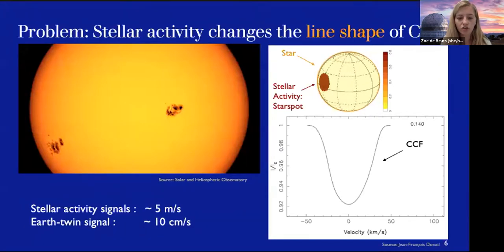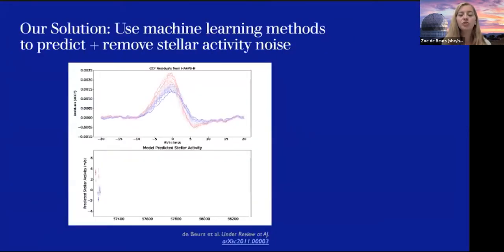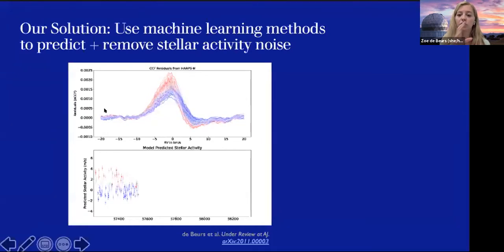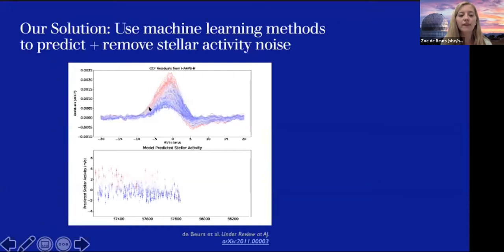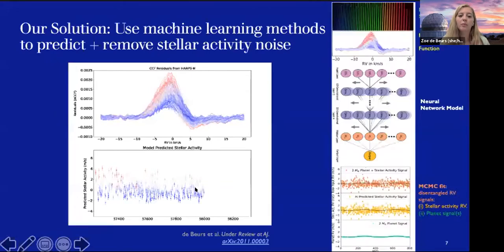Our solution is to use machine learning methods to predict and remove stellar activity noise, revealing signals of smaller planets. We train these methods to predict stellar activity RV changes based on the shape changes seen in CCFs. In a recent paper under review at the Astronomical Journal, we show CCFs color-coded by red-shift or blue-shift fed into a neural network, which predicts the stellar activity signal. This work was done on the Sun using the HARPS-N solar telescope and inspired our work on K2-167.